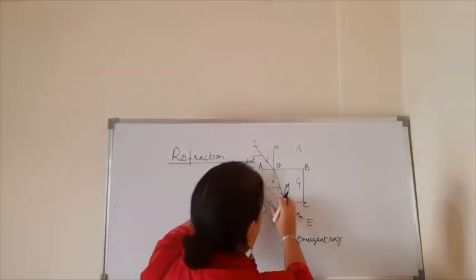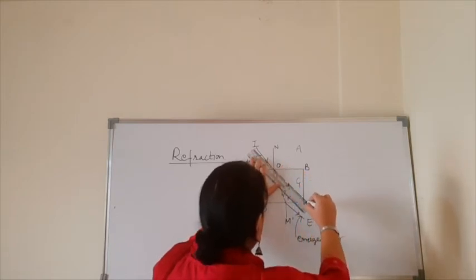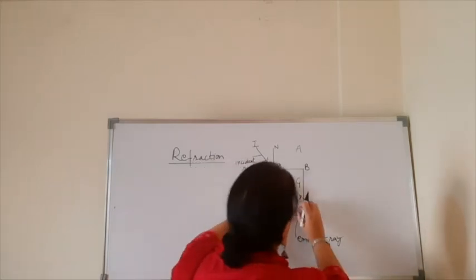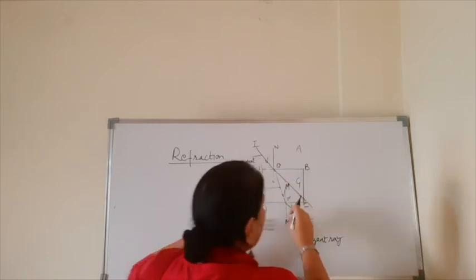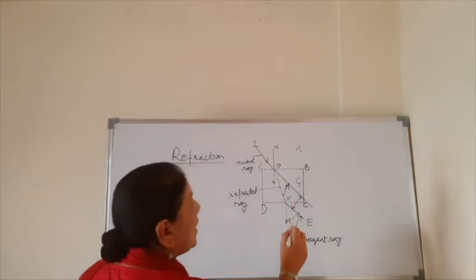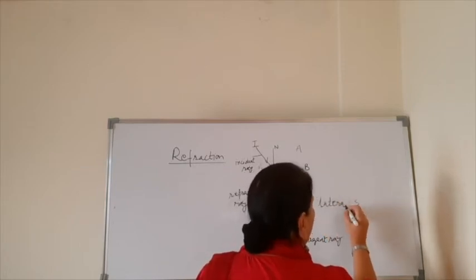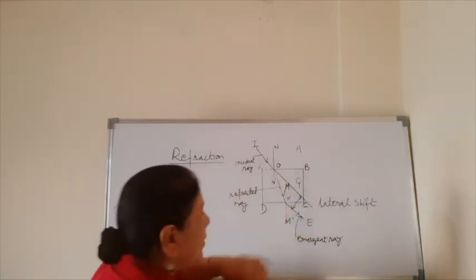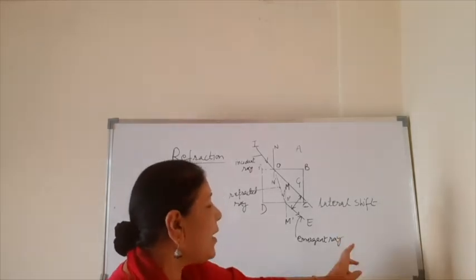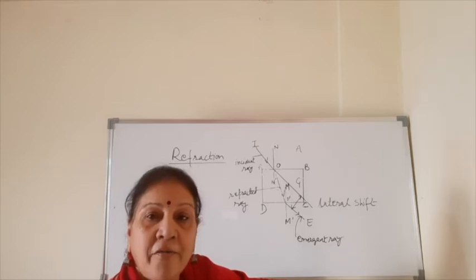This is how refraction takes place in a glass slab. If you produce the rays, you can verify in the lab that the emergent ray and the incident ray are parallel to each other. The shift between the emergent ray and the incident ray is referred to as lateral displacement, lateral deviation, or lateral shift. This is all about refraction through a glass slab.